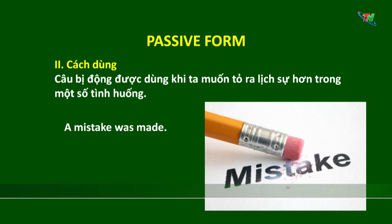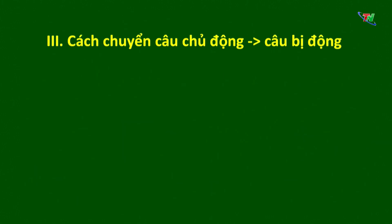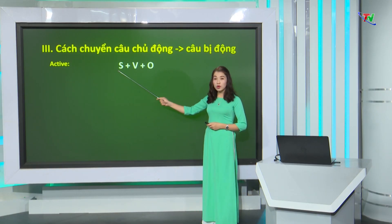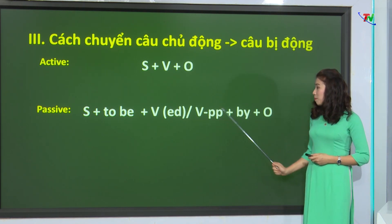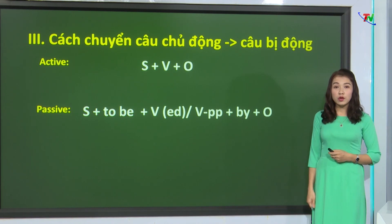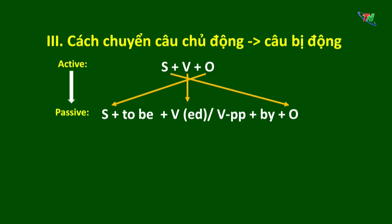Vậy làm thế nào để chuyển một câu từ câu chủ động sang câu bị động? Chúng ta có dạng chung của câu chủ động là: chủ ngữ + động từ + tân ngữ. Và câu bị động sẽ có dạng: chủ ngữ + động từ to be + quá khứ phân từ + by + tân ngữ. Các bước thực hiện: Thứ nhất, xác định chủ ngữ, động từ và tân ngữ. Bước thứ 2, chuyển tân ngữ của câu chủ động thành chủ ngữ của câu bị động, và chủ ngữ của câu chủ động thành tân ngữ của câu bị động. Bước thứ 3, chia động từ bị động. Động từ bị động có dạng chung là: to be + quá khứ phân từ. Chúng ta chia to be phù hợp với chủ ngữ của câu bị động và phù hợp với thì của câu chủ động, và động từ chuyển về quá khứ phân từ.